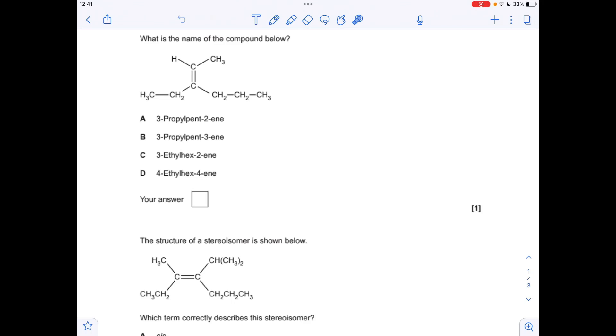So for the name, first thing I'm going to do is establish the longest continuous carbon chain. So it's obviously this one here. So it's six long, so it's going to be a hexane. The carbon-carbon double bond is at carbon two. That's the shortest number. So it's going to be hex-2-ene. And we've got an ethyl group at carbon three. So the answer was C, 3-ethylhex-2-ene.